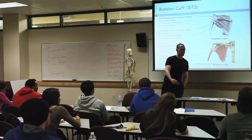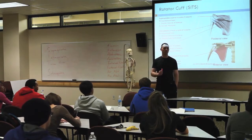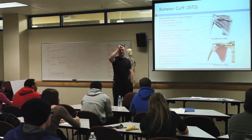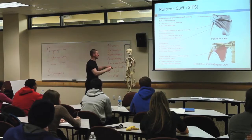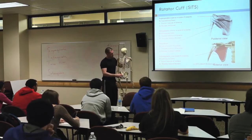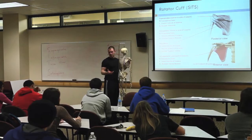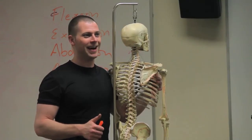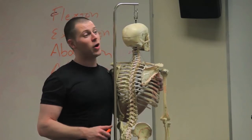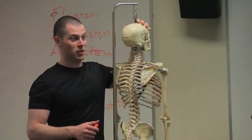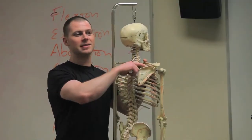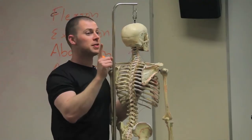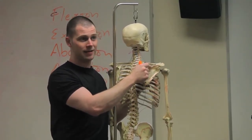Remember I said anatomy is just another language, so let's break this word down. Supra sounds like superior. Spine — what bone are we on? Scapula. Does the scapula have a spine? It does. So the origin of this muscle is the supraspinous fossa. What's the layman's term for fossa? A foramen is a hole, but a fossa is like a depression, an indent. So this depression right here is the supraspinous fossa, which just happens to be superior to the spine of my scapula.